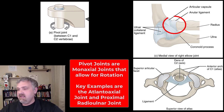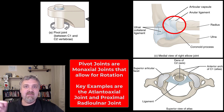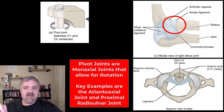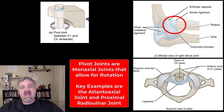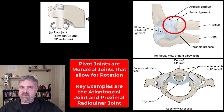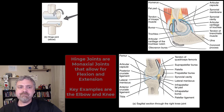The other example is the proximal radio-ulnar joint. The annular ligament holds the circular head of the radius up against the ulna. When I pronate and supinate my forearm, this rotation occurs at the proximal radio-ulnar joint. These are examples of pivot joints, which are monaxial or uniaxial.